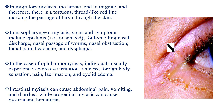In the case of ophthalmomyasis, individuals usually experience severe irritation, redness, foreign body sensation, lacrimation, and eyelid edema. Intestinal myasis can cause abdominal pain, vomiting, and diarrhea, while urogenital myasis can cause dysuria and hematuria.